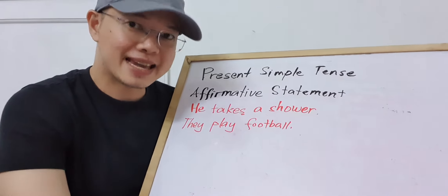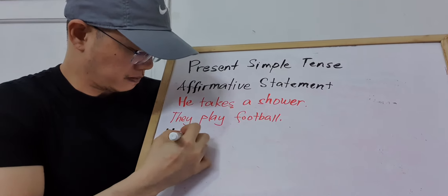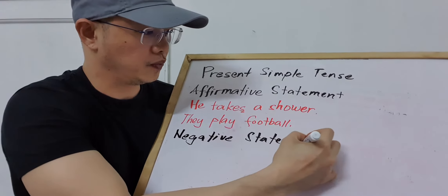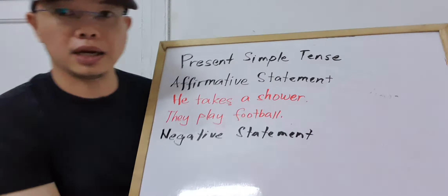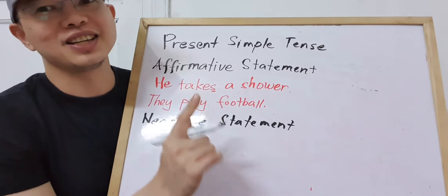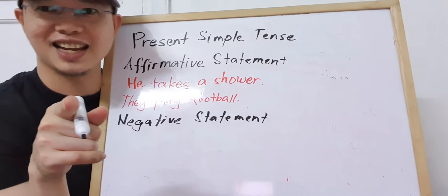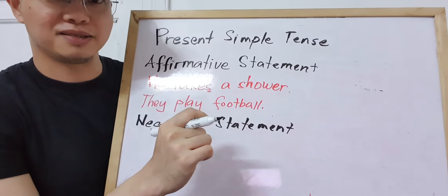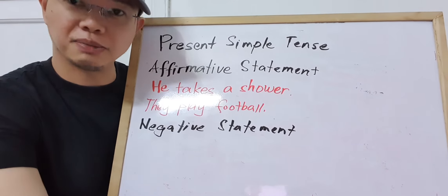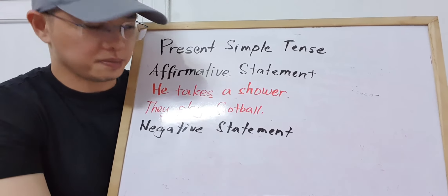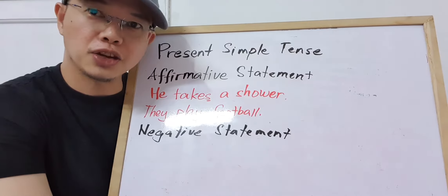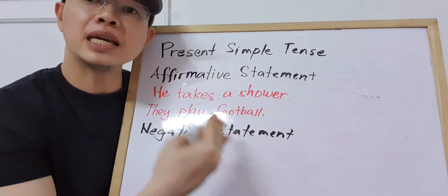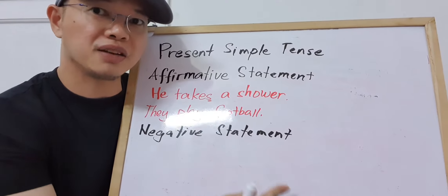Next, let's have a negative statement. For the negative statement, if your subject is singular, you're going to use 'doesn't' and then the main verb must be in the base form. If the subject is plural, you're going to use 'don't' and then the main verb is also in the base form.